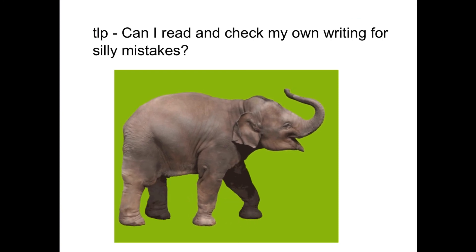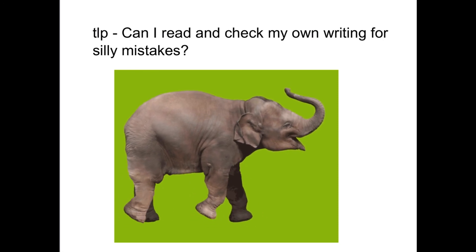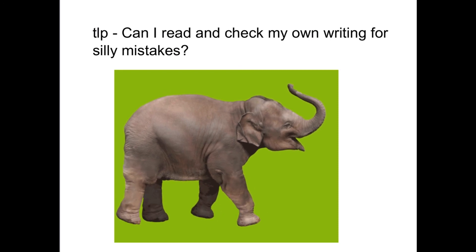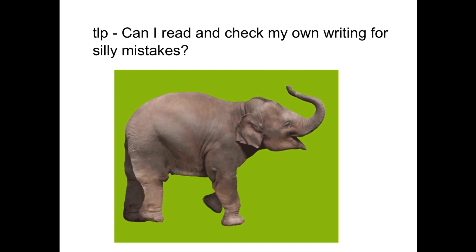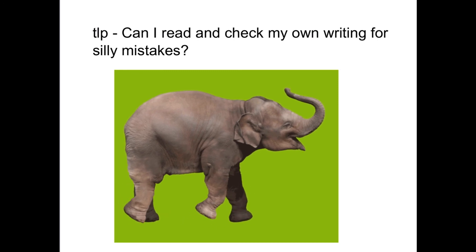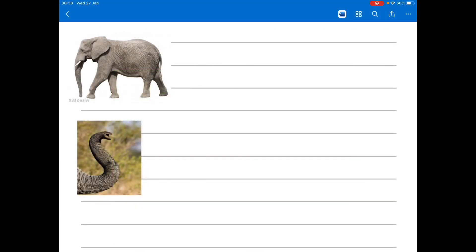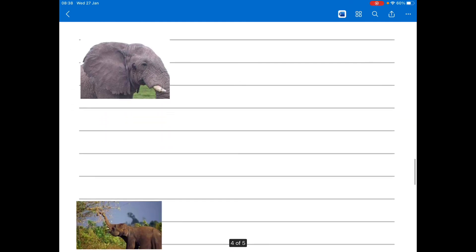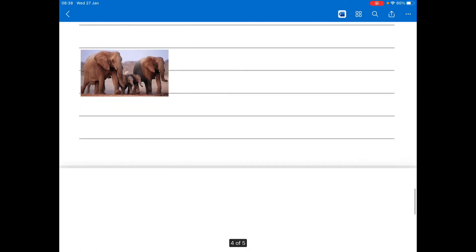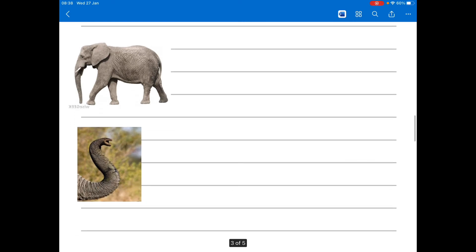Your TLP is: can I read and check my own writing for silly mistakes? Hopefully you've written a bit about elephants and you can check it for mistakes. You could use a green pencil and a pink pencil and pretend you're a teacher and mark it like a teacher. If you haven't finished your report or haven't done it yet, now's your time. Remember, this is the piece of paper in your pack that you're looking for - there are two separate pieces of paper to write your report on. I really look forward to seeing some of them.